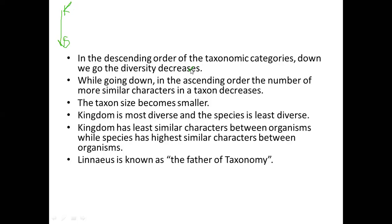Let's talk about the kingdom. We have Animalia and Plantae — two types of kingdoms. Animals are of many kinds: insects, birds, mammals, arthropods, annelids, platyhelminthes, and all the worms. They are all in this category of animals. Comparatively, there is much diversity in animals.